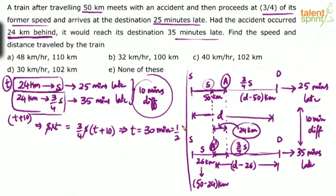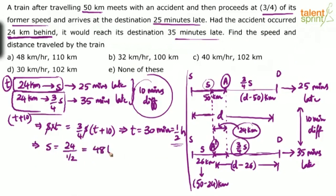Time taken is half an hour to cover 24 kilometers. So speed = distance / time = 24 kilometers / 0.5 hours = 48 kilometers per hour. So the speed of the train is 48 kilometers per hour.